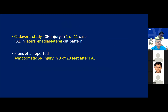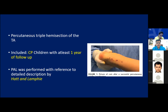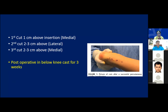A previous cadaveric study reported sural nerve injury in 1 out of 11 cases with a lateral-medial-lateral cut pattern; a study by Kranz reported symptomatic sural nerve injury with pain and orthosis non-compliance in 3 out of 30 feet after percutaneous Achilles lengthening. This retrospective study included 30 CP patients operated by percutaneous triple hemisection of the tendo Achillis using the technique described by Hatt and Lamphier, with at least one year of follow-up, studied by postoperative MRI.